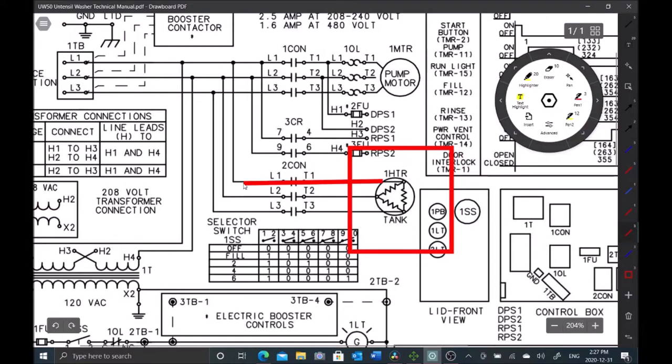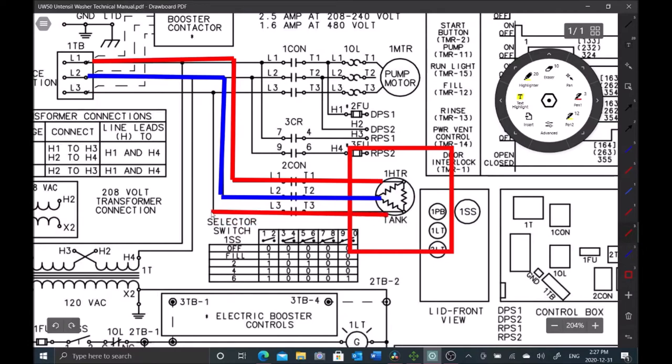We're going to start with our T1 L1. It goes through the contactor contact and it is a straight shot to our terminal block. L2 same thing. We come here, go through our contactor contacts and come right up to L2 on our terminal block.